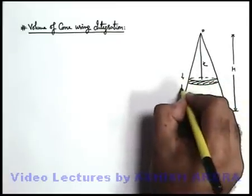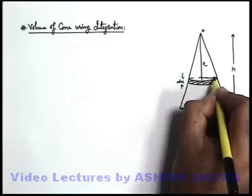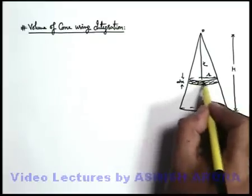Say each disc is of width dx, and say the radius of this disc is r. Now, if we calculate the volume of this disc and we integrate this disc from such disc from zero to h.